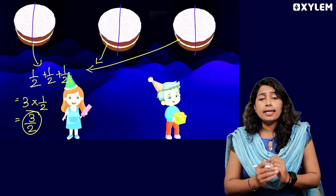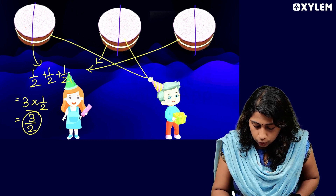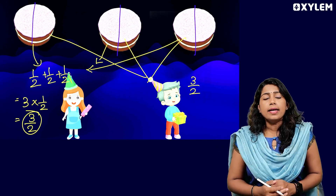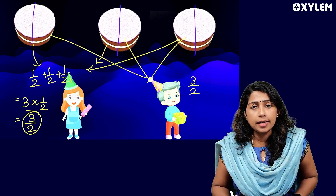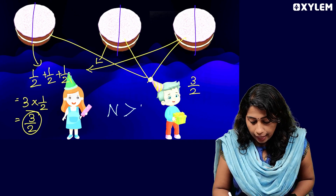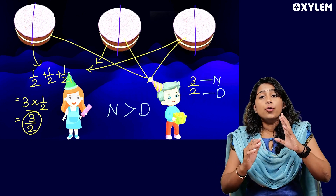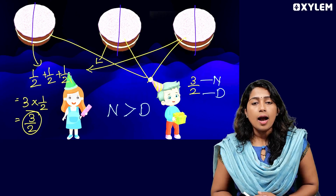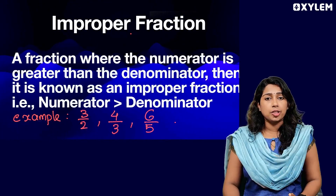How much cake will each guest get? 3 by 2 — each guest will get 3 by 2 cake. What does 3 by 2 mean? The numerator 3 is greater than the denominator 2. In this case, what do we call this? This is called an Improper Fraction.